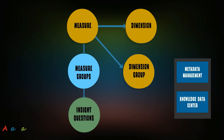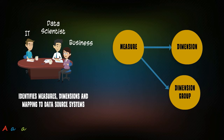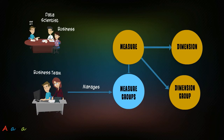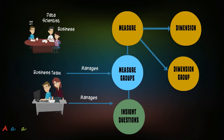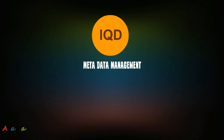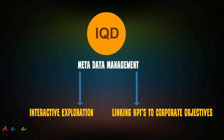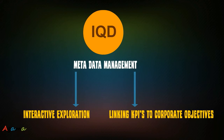Metadata management is done in three steps, and the metadata resides in the knowledge data center. IT, data scientists, and the business team identify the measures and dimensions. IT and data scientists are involved in mapping direct measures and dimensions with data source systems. The business team manages measure groups on their own, without technical know-how or assistance. Insight questions are also managed by the business team on their own, enabling the business to answer any question that might arise, with efficient exploration, effective evaluation, and informed decision-making resulting in efficiency.